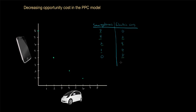And finally, if this country were to allocate all of its resources towards electric cars, it would produce zero smartphones. The production possibilities curve for this country looks a little different than ones we've seen in previous videos, because it is bowed inwards, not outwards. Notice that this is a convex production possibilities curve — it's bowed inwards towards the origin.